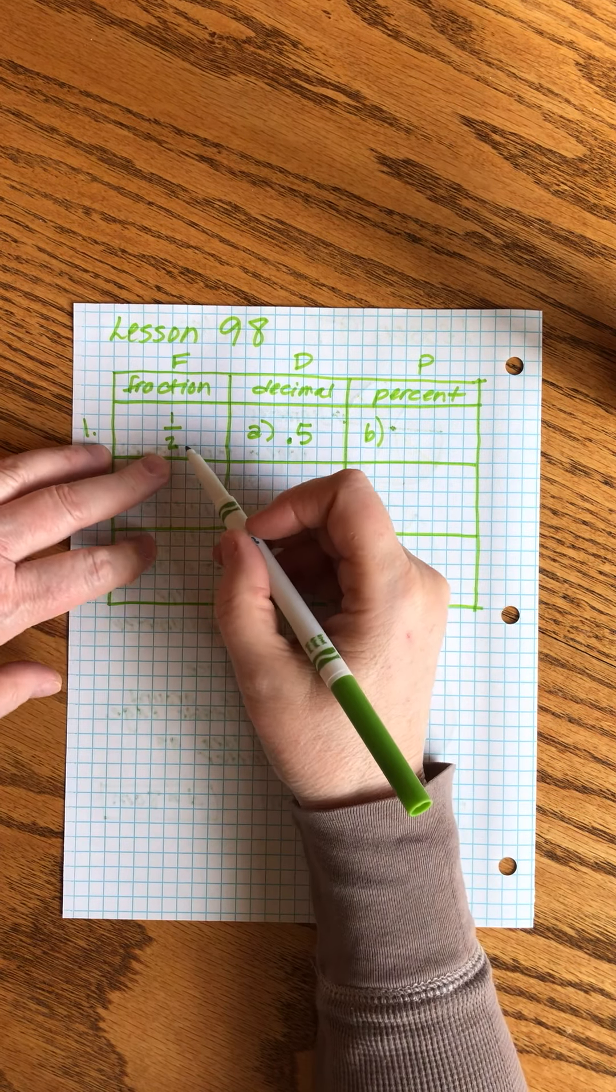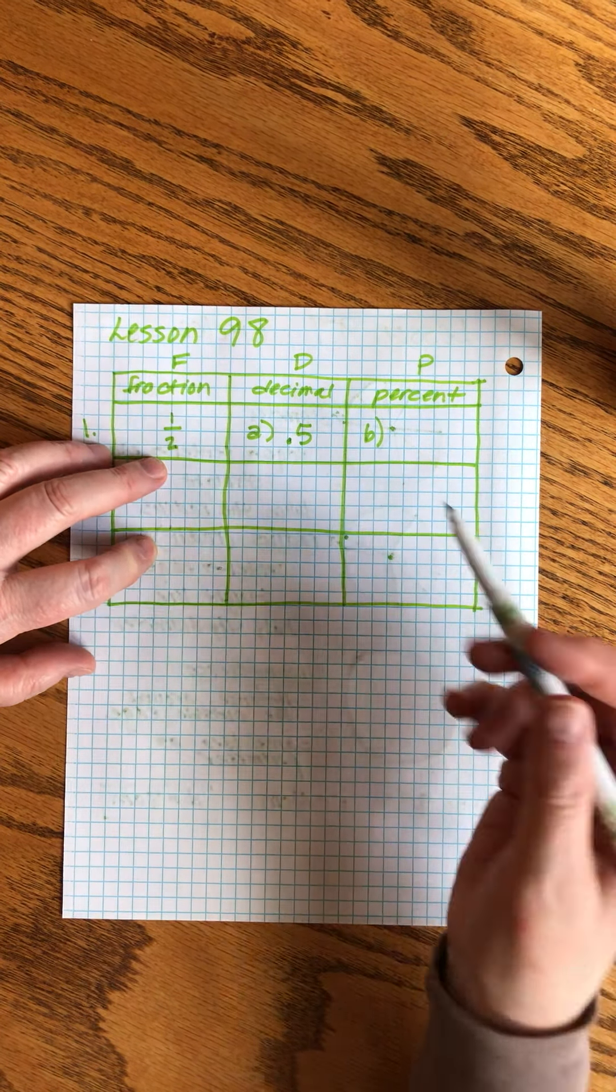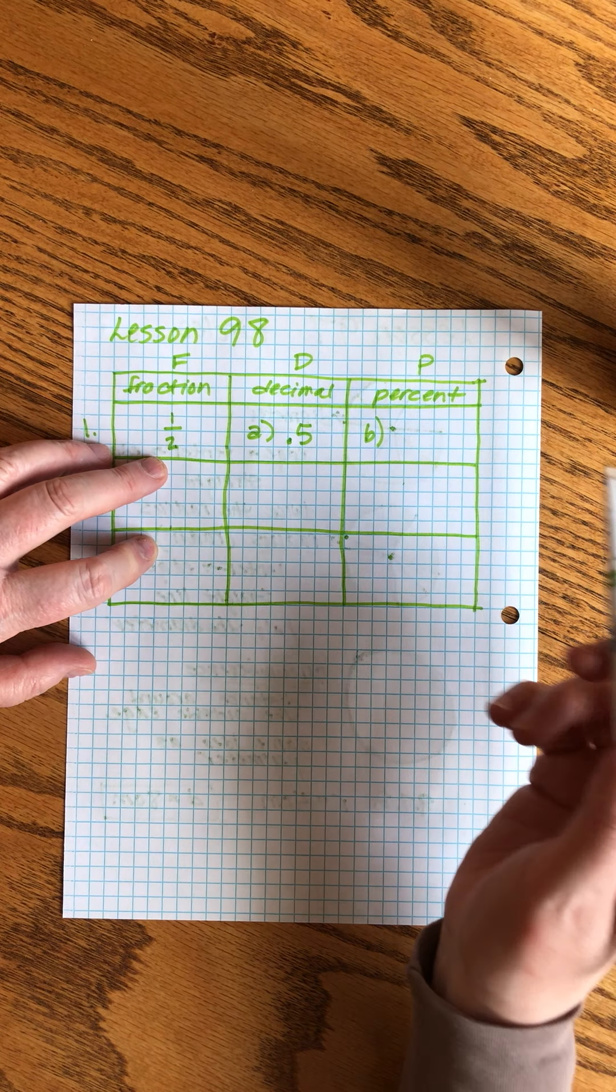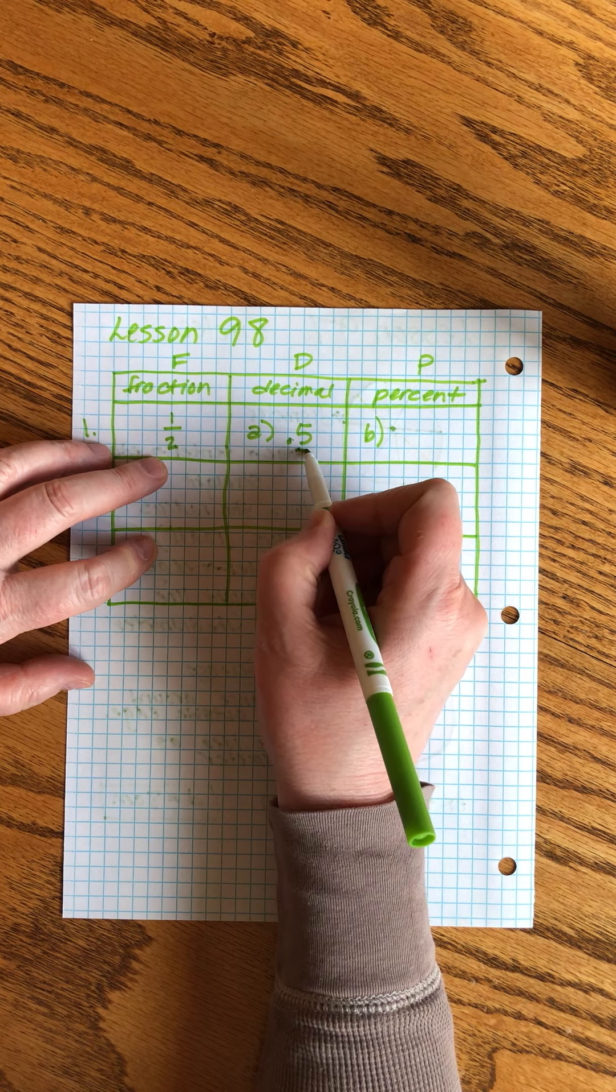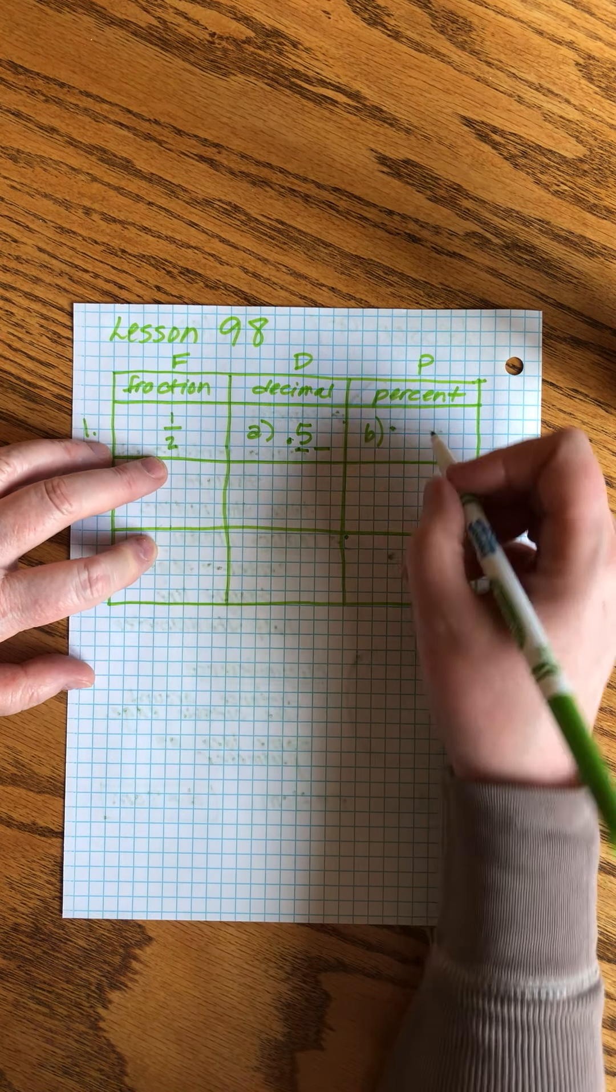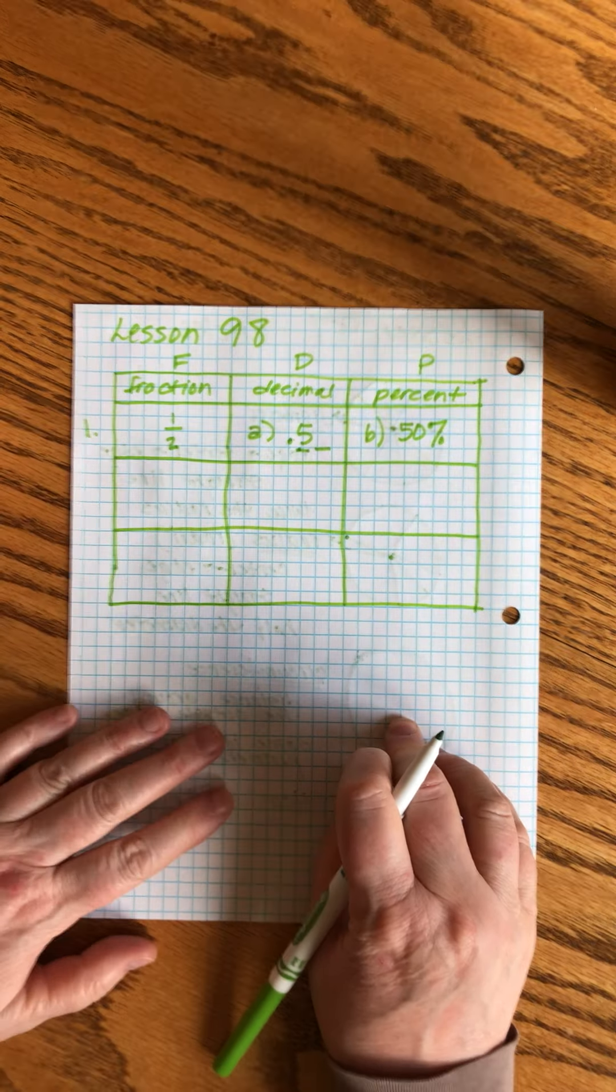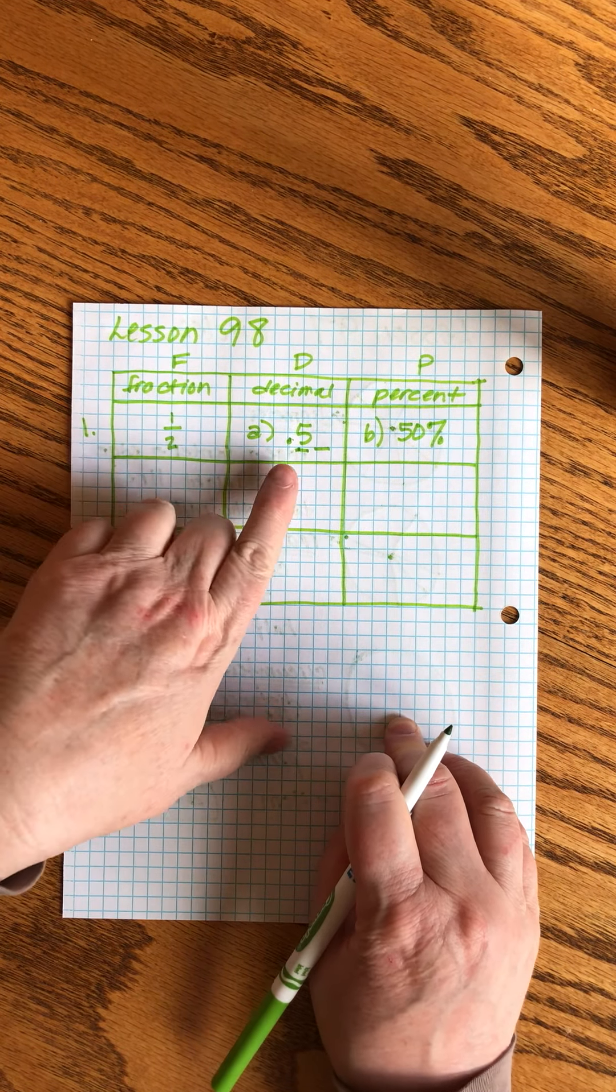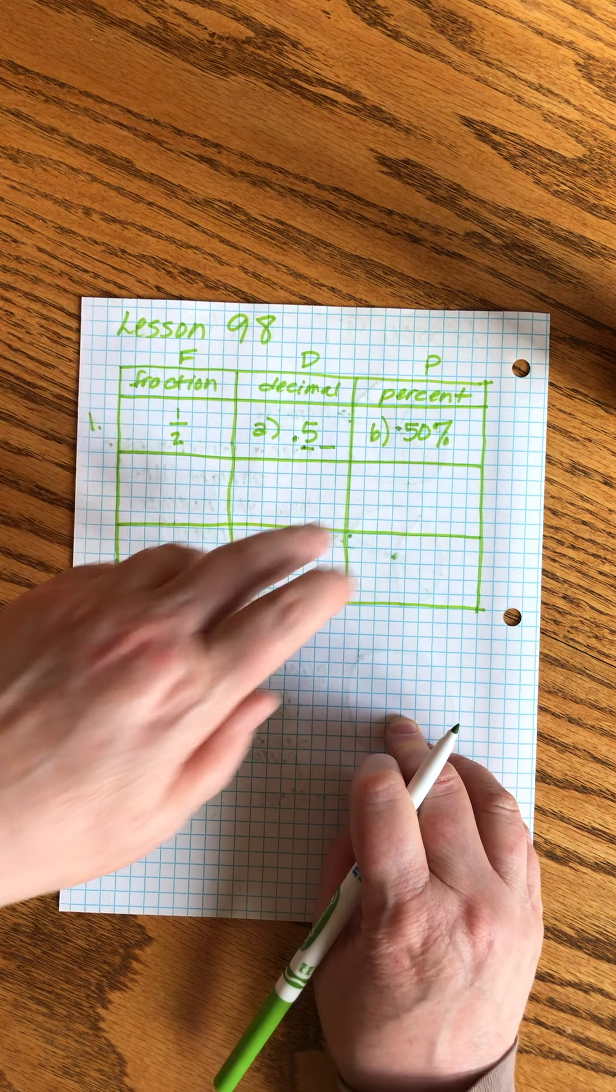We can see that two went into ten, we could just divide one divided by two, we'd get 0.5 as well. Now we know that when we go from decimals to percent we move the decimal place twice, and so this would be fifty percent. We've now completed the first two parts in the first row of the FDP table.